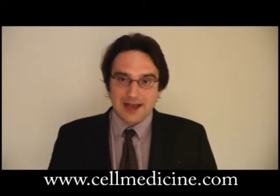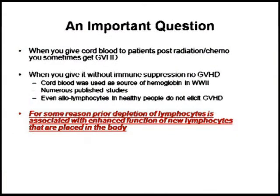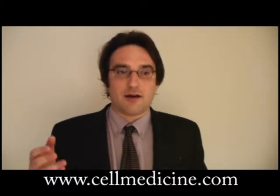One of the big questions that people ask is: why does a cord blood infusion, when used in the context of treating leukemia, why does graft-versus-host happen sometimes? Whereas when cord blood is being used for regenerative purposes, you do not see graft-versus-host, or it has not been reported yet. And for regenerative purposes, what I mean by that is treatment of conditions where you do not first destroy the immune system of the patient.